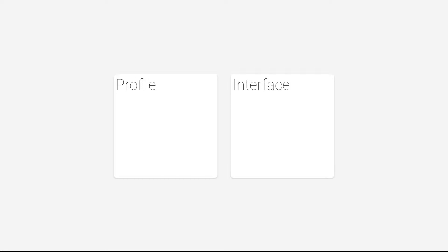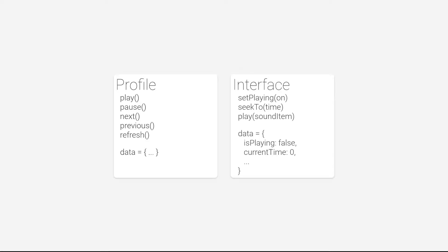Profiles implement play, pause, next, and previous methods. Some of these, depending on the implementation, just defer off to the interface. And everything here should just be pretty self-explanatory. Interfaces simply play the audio that profiles tell them to.